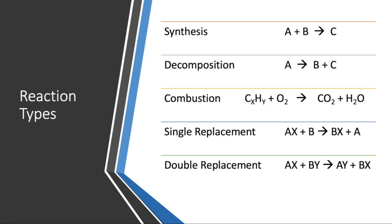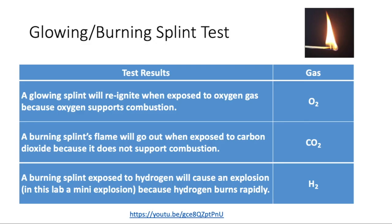Now in lab today, you're going to be doing a variety of different chemical reactions and some of them are going to produce gases. Because they produce gases, we'll want to characterize them. There are three gases you're going to look into today: oxygen, CO2, and hydrogen. To test for these, you're going to do a glowing and/or a burning splint test.